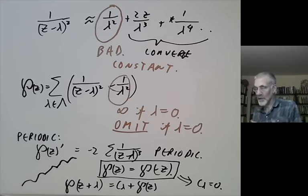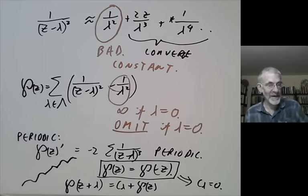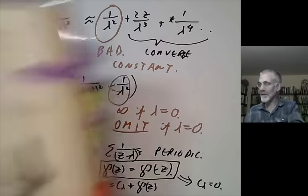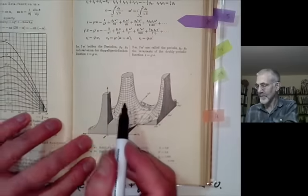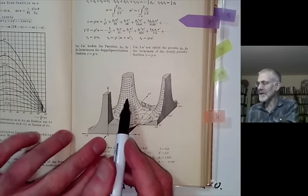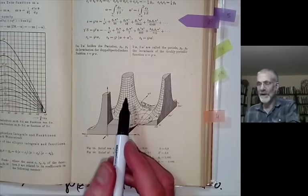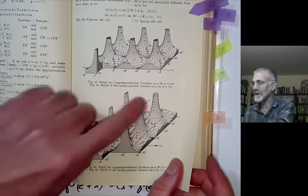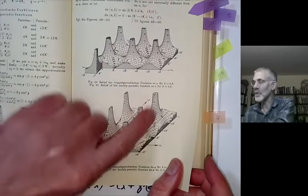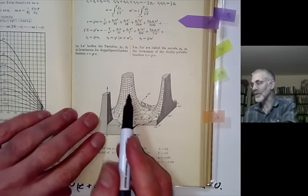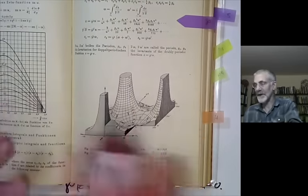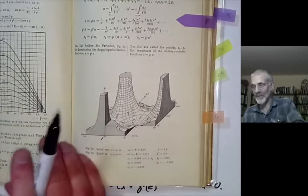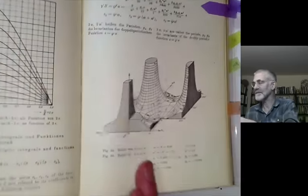So we've found a periodic function. I have an explicit picture of the Weierstrass ℘ function — you can see the poles are a little fatter than in the previous picture because these are poles of order 2, which are bigger and heftier than poles of order 1.